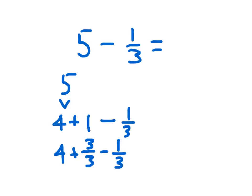Three-thirds minus one-third is two-thirds, and we have that whole number of four. So that five minus one-third is just four and two-thirds.